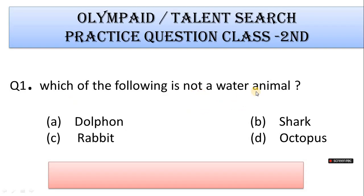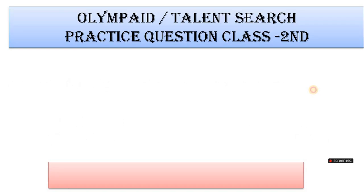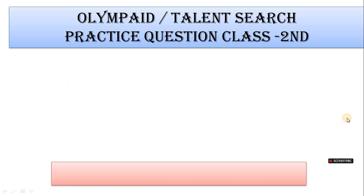Question 1: Which of the following is not a water animal? A. Dolphin, B. Shark, C. Rabbit, D. Octopus. Correct answer is Option C. Rabbit.